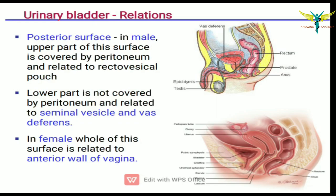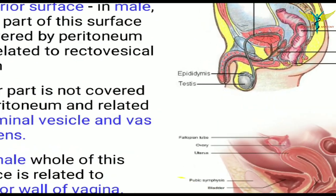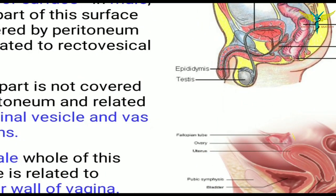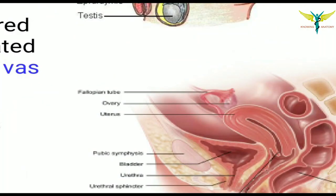In females, the whole of the posterior surface is related to the anterior wall of the vagina. The posterior wall of the bladder is totally related to the anterior wall of the vagina.